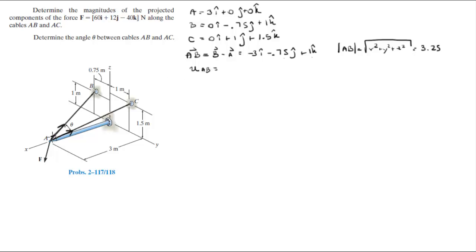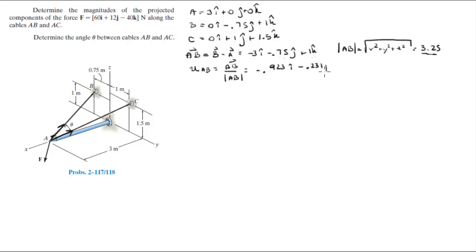Now we can find the unit vector AB. The unit vector is the tiny vector with a magnitude of 1 pointing from A to B. You find it by dividing the vector AB by its magnitude, dividing each of the three components by 3.25. The unit vector is −0.923i − 0.231j + 0.308k.